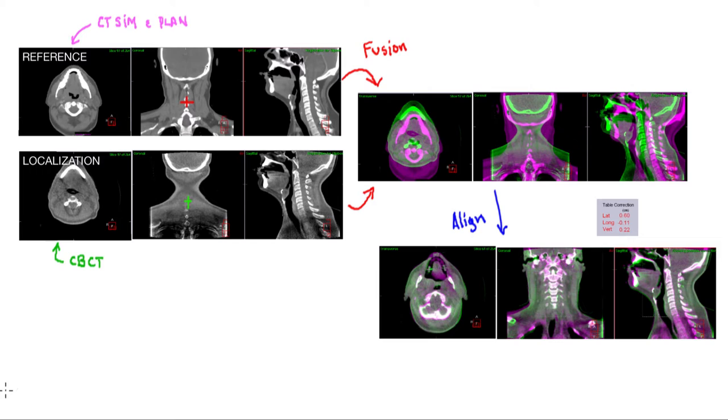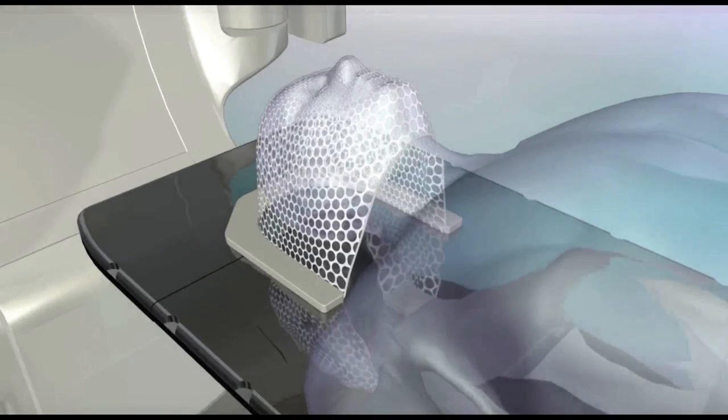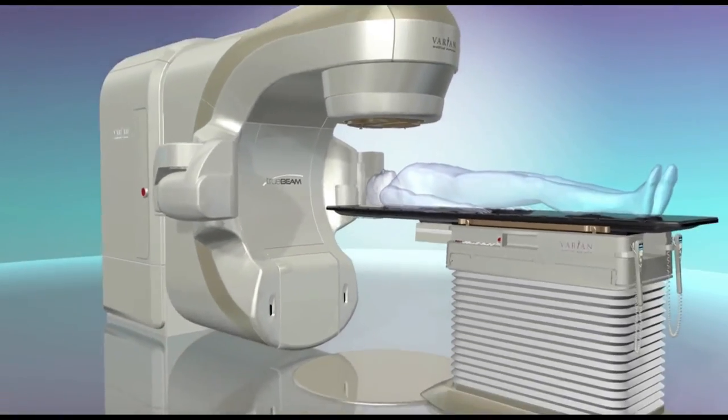Those are the basics of IGRT with cone-beam CT. Another form of IGRT uses planar images — radiographs — which can be taken with either a kV or MV imager.